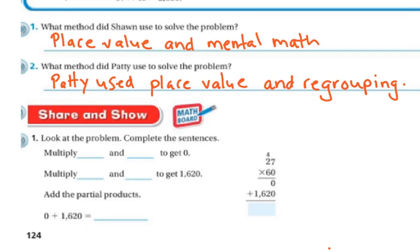So let's do the share and show. Look at the problems and complete the sentences. So we're looking over here. So they want us to know what to do first. So remember, I'm going to look at my ones place. So that's a 0. So I'm going to multiply the 0 and the 27. And I'm going to get 0, right? Because anything times 0 is 0. Next up, now I'm looking at this tens place. So now I'm going to multiply 60 times the 27. So 60 times 27, and I'm going to get 1,620. Then I'm going to add those two up, those two partial products up, and I'm going to get 1,620.